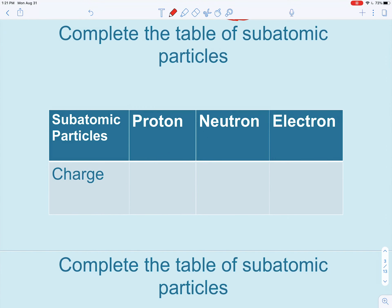Okay, here we're just reviewing the charges of the different particles. So protons are positive, neutrons, as the name implies, are neutral, and electrons are going to be negative.